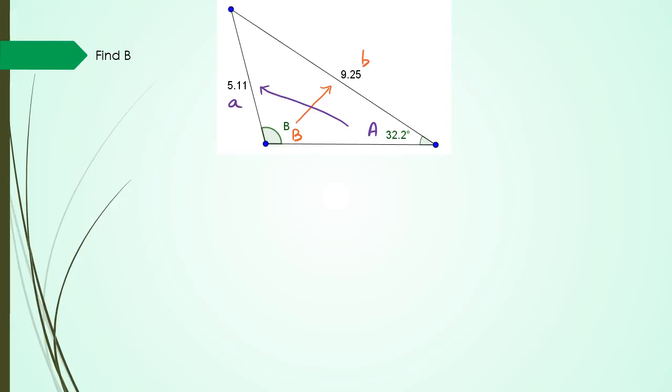I've got angle A which is 32.2 and the side opposite it is 5.11, which is going to be little a. Now as usual, you don't have to start writing it as sine A over a equals sine B over b. In this one you could do it as sine B over b equals sine A over a.